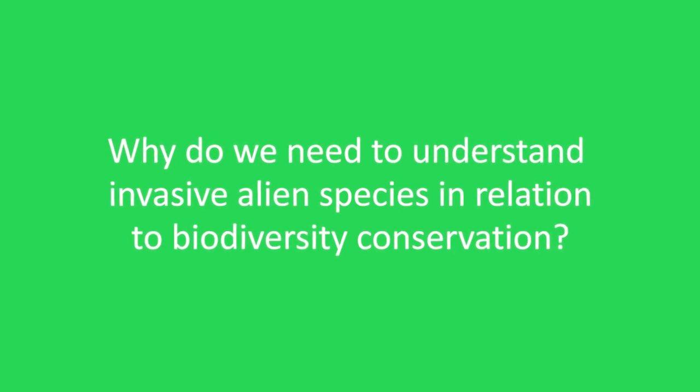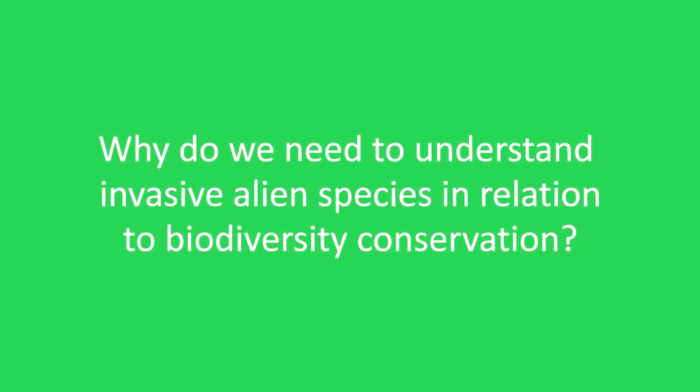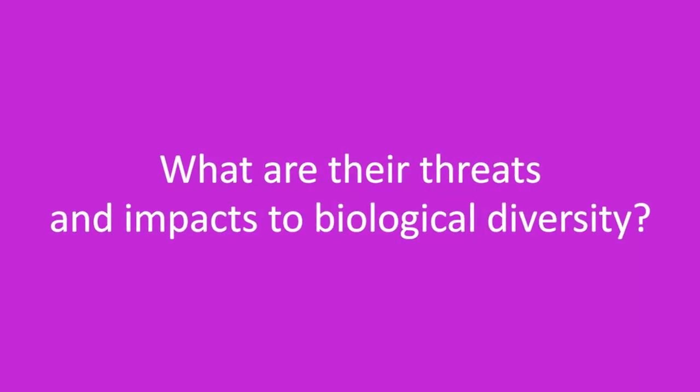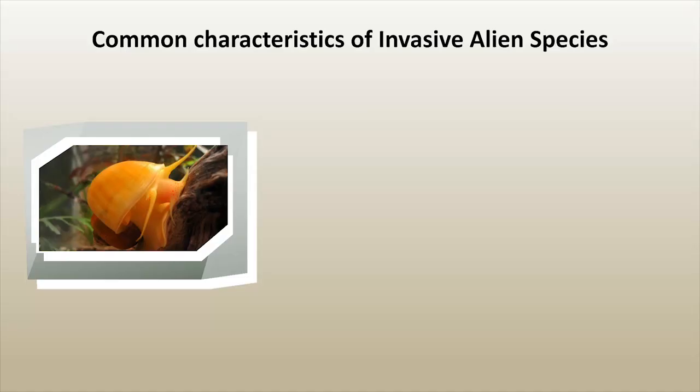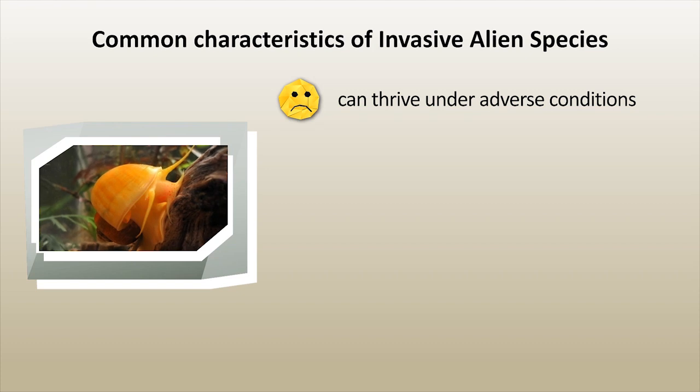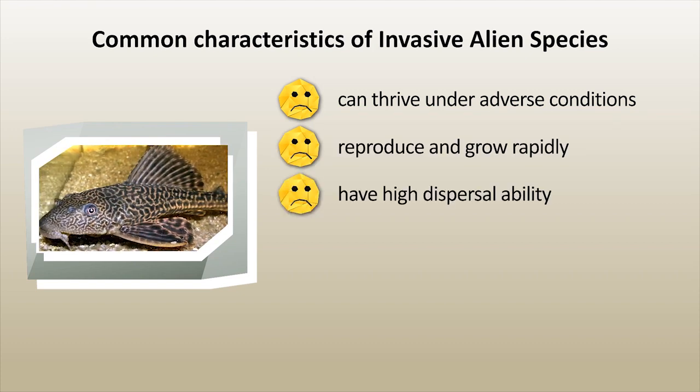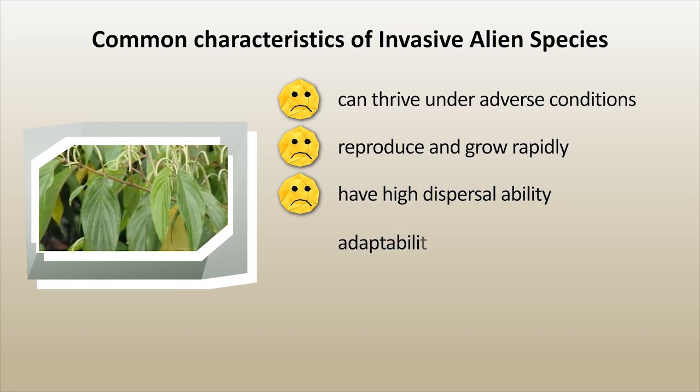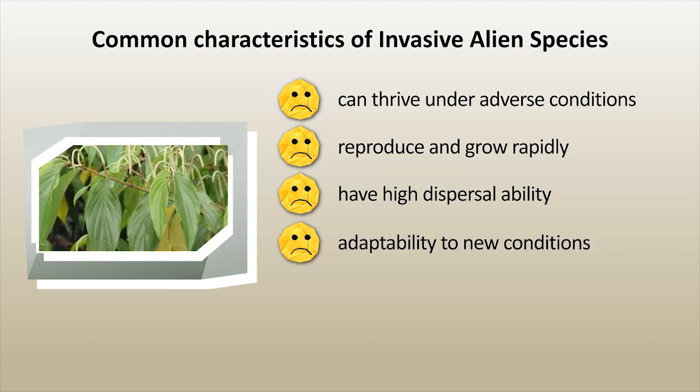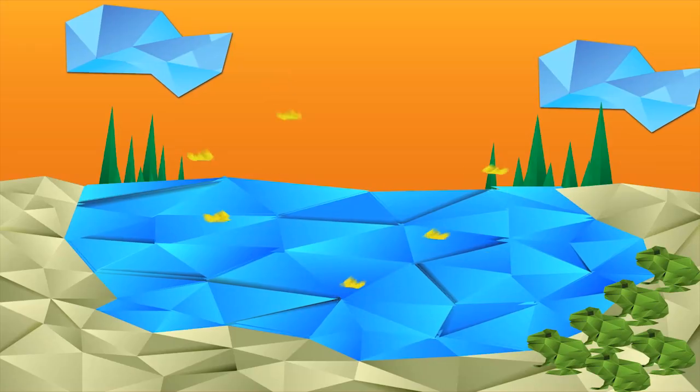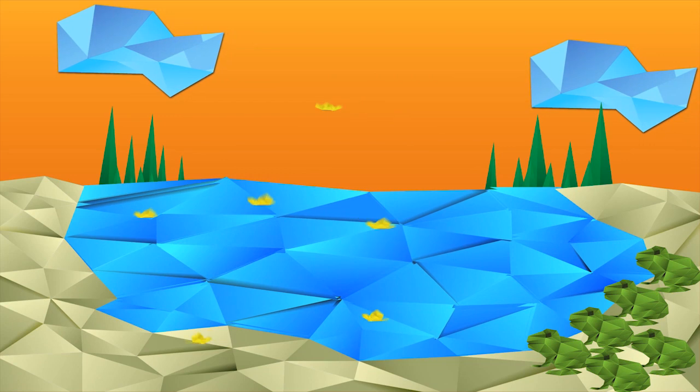Why do we need to understand invasive alien species in relation to biodiversity conservation and what are their threats and impacts to biological diversity? Invasive alien species have common characteristics: they can thrive under adverse conditions, reproduce and grow rapidly, have high dispersal ability and adaptability to new conditions, and are able to survive on various food types in a variety of environments.